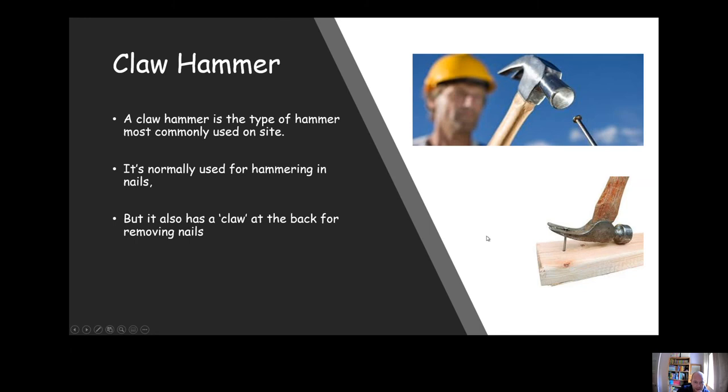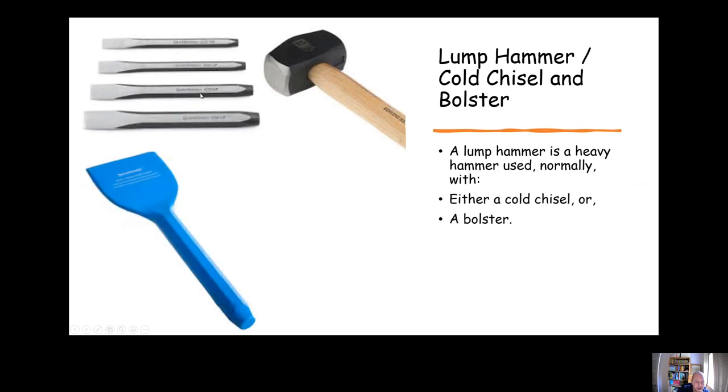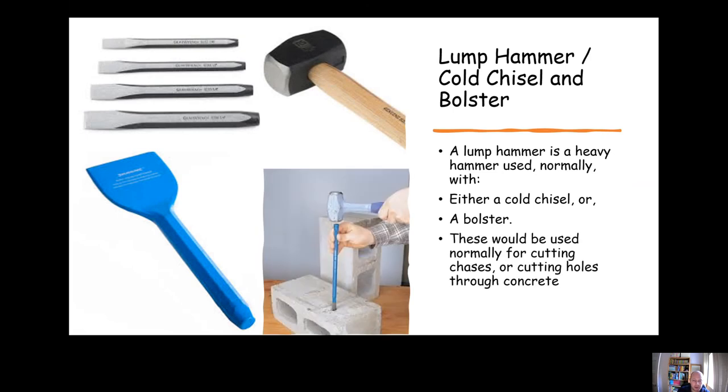Lump hammer - it's like this big chunky thing here, big heavy hammer. We normally use it with either a cold chisel or a bolster. That's for knocking holes through concrete and stuff. The cold chisel we'd probably use for knocking holes through concrete and block. The bolster we might use for cutting chases or for potentially even splitting floorboards if you need to lift the floorboard and you want to split the feather edge.